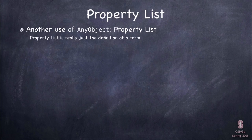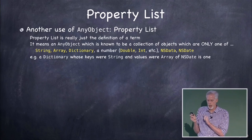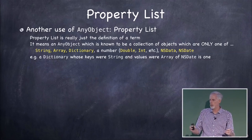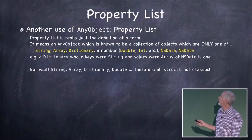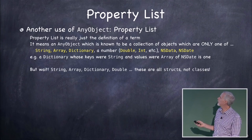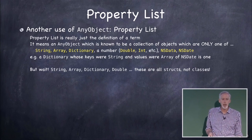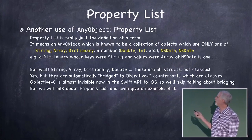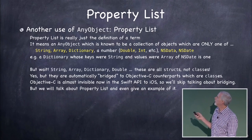Another use of AnyObject is property lists. Property lists are essentially any combination of Array, Dictionary, String, Double, Int, NSData, and NSDate. If you build any data structure out of only those classes, you've got a property list. You might wonder: Array, String, Dictionary, and Double are structs — how can they ever be in a property list or be AnyObject? The answer is the automatic bridging to Objective-C: it automatically treats them like NSDictionary, NSArray, and NSNumber, which are all classes, and allows them to be AnyObject.